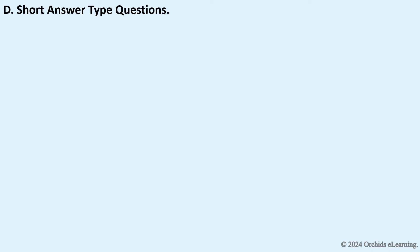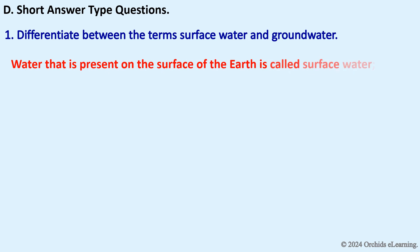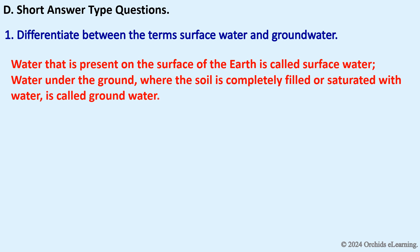Short answer type questions: Differentiate between surface water and groundwater. Water that is present on the surface of the earth is called surface water. Water under the ground where the soil is completely saturated with water is called groundwater.